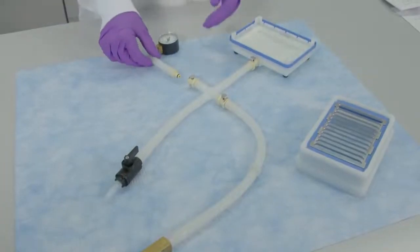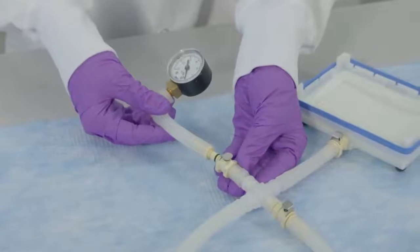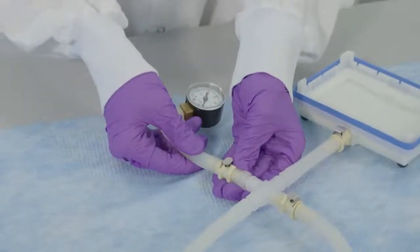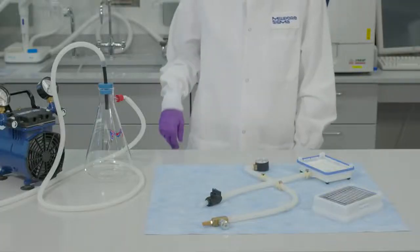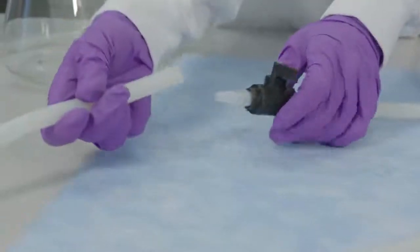Push the coupling insert on the end of the vacuum gauge tubing into the quick disconnect fitting on the longer arm of the four-way connector. Then you need to connect the vacuum source to the vacuum manifold using the tubing provided.